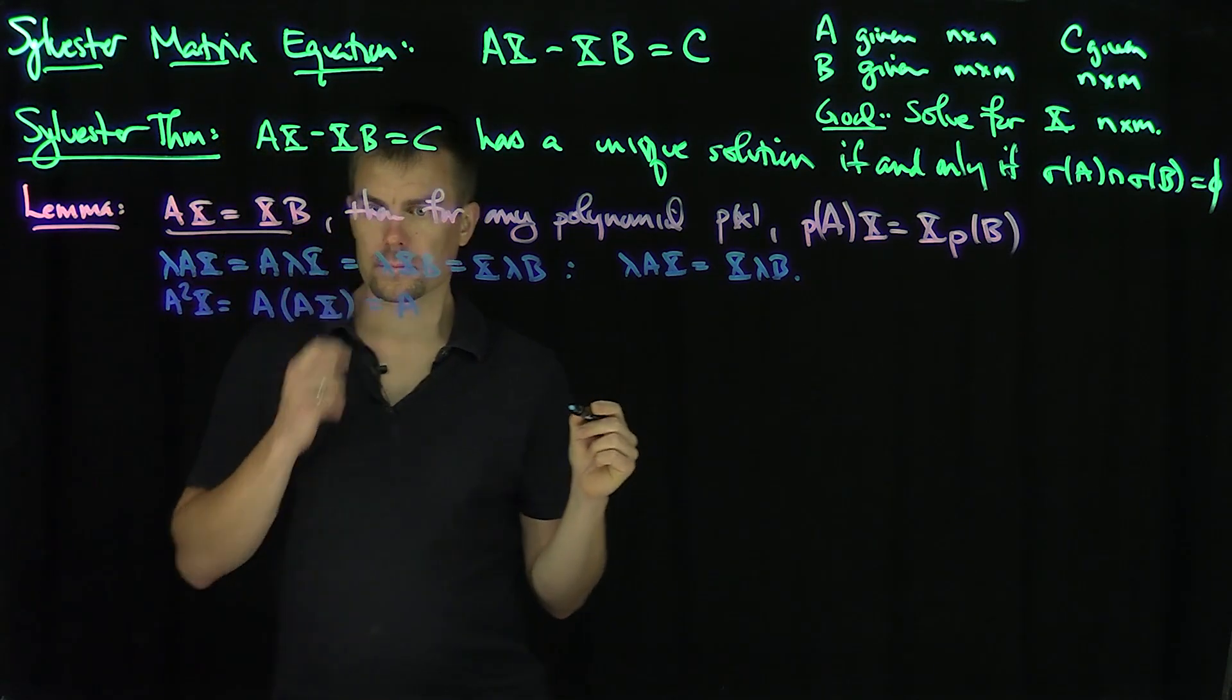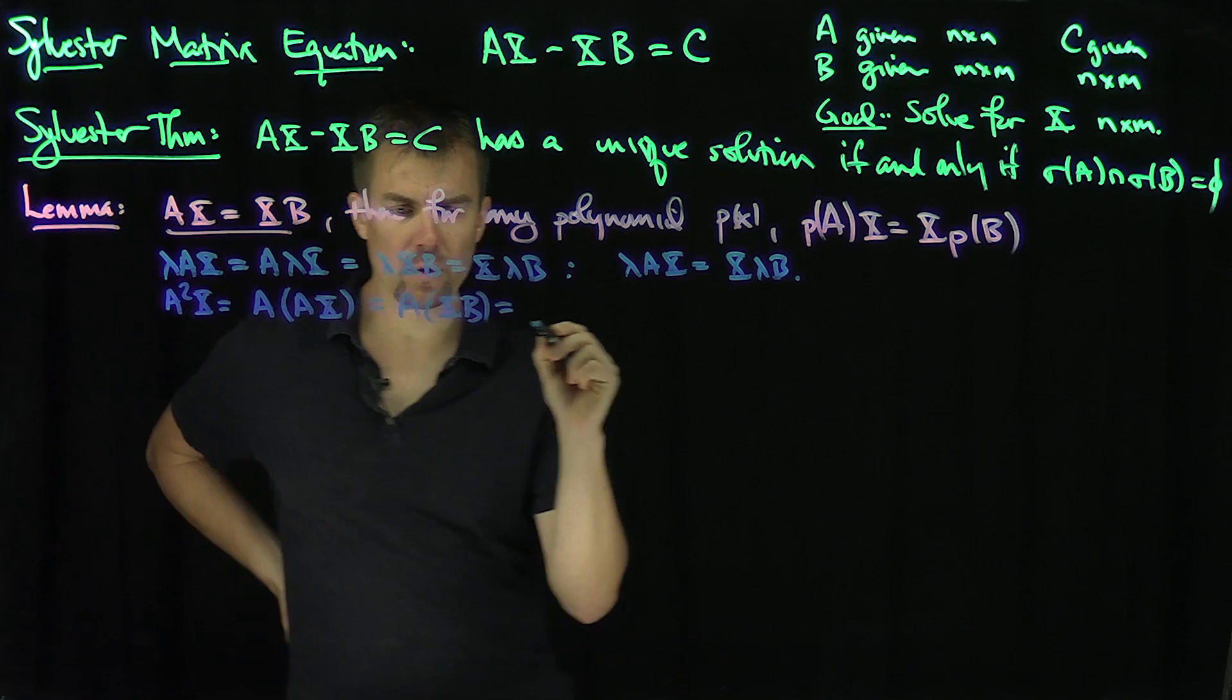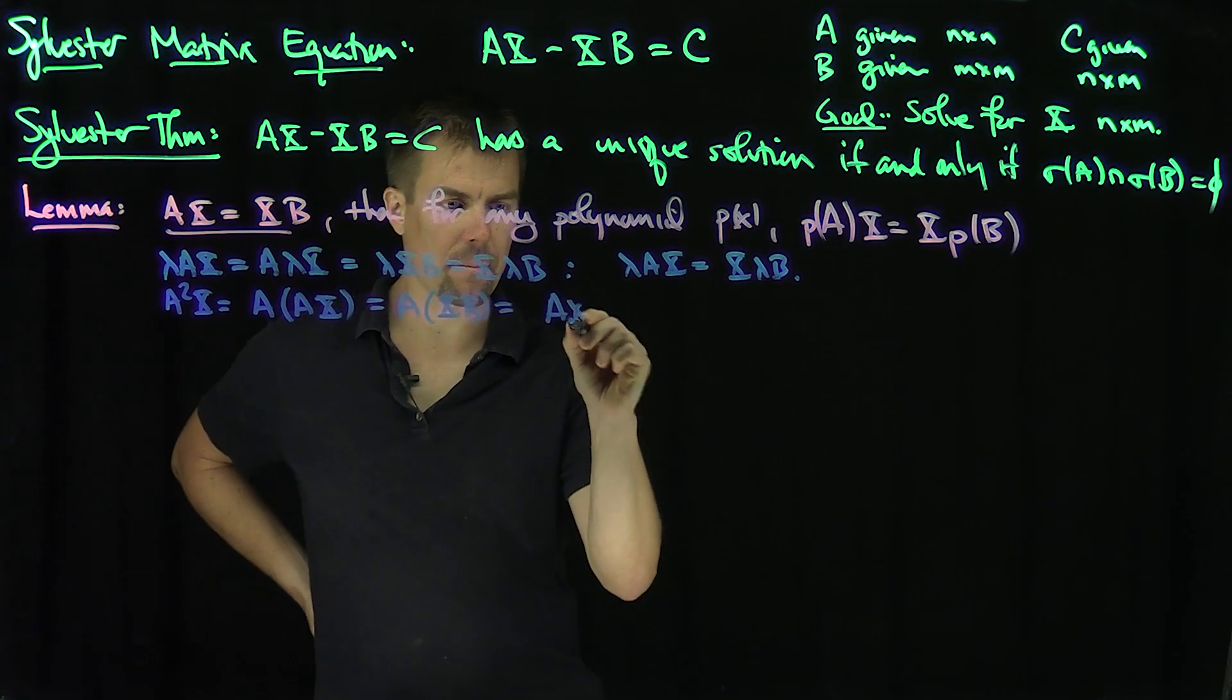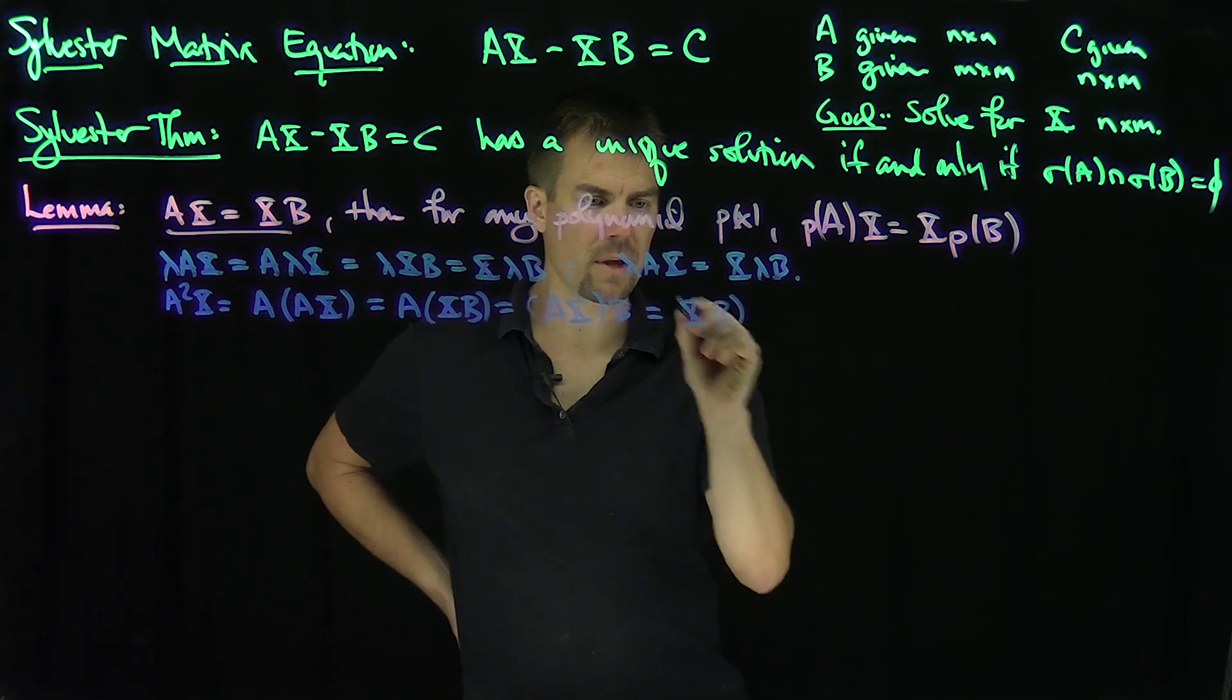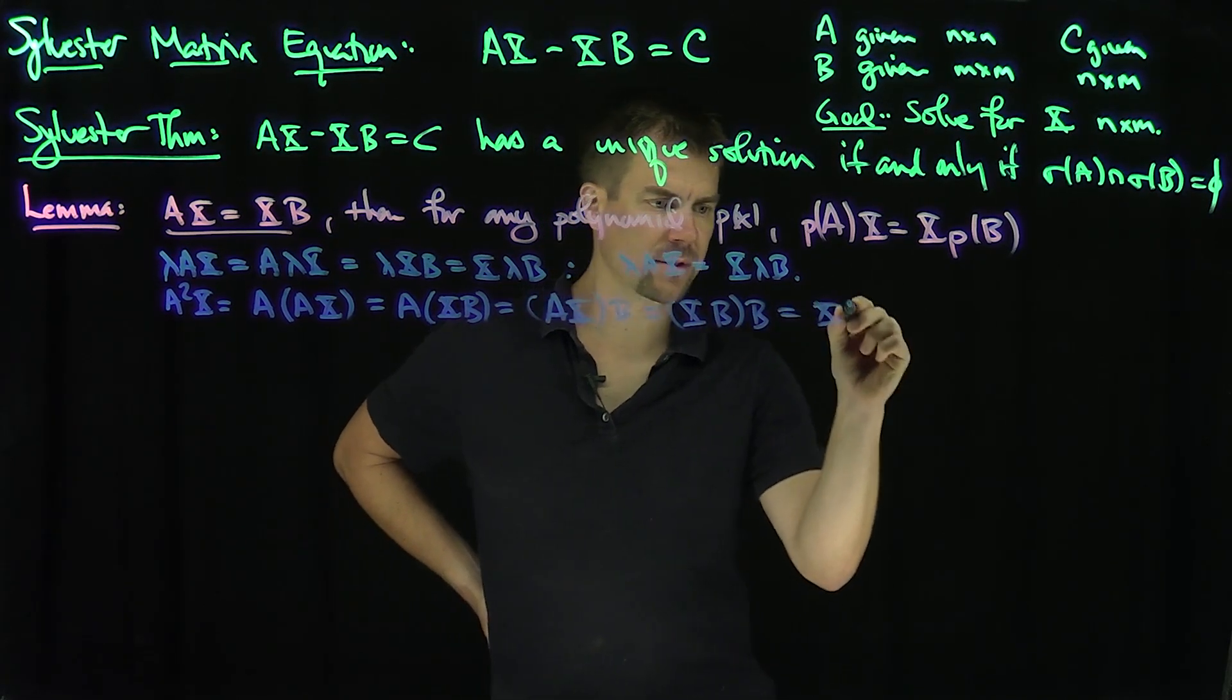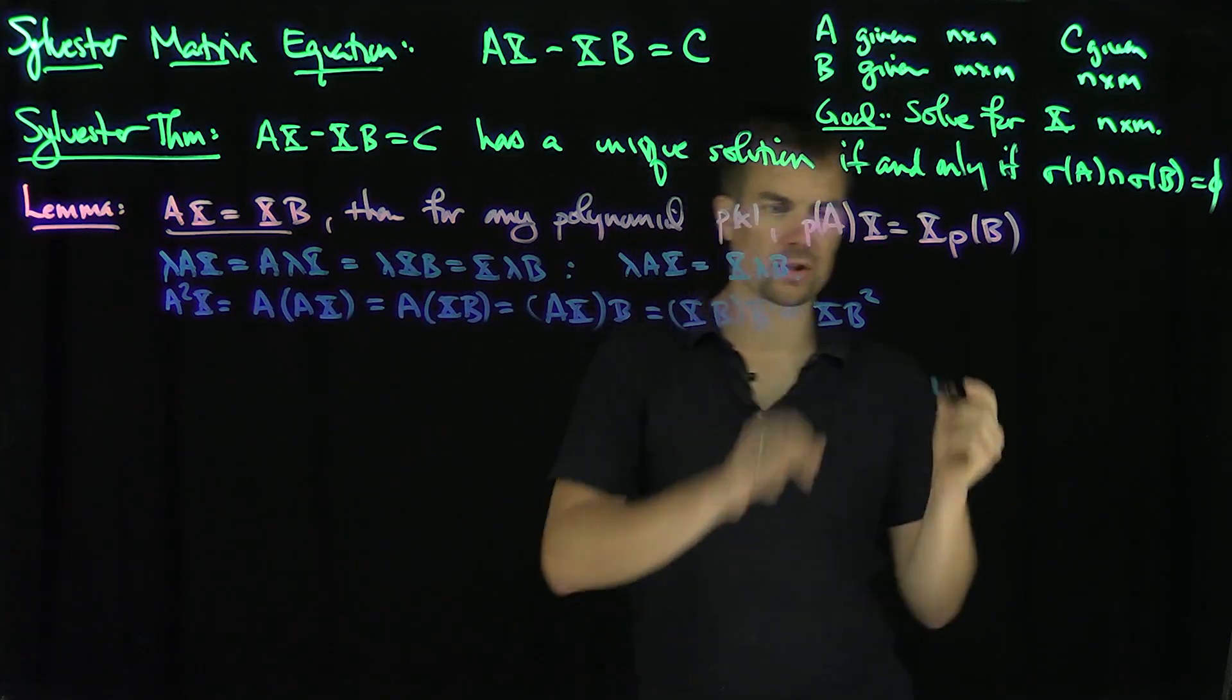That is going to be XB, which is going to be A times XB by associativity, and that's going to be XB. So XB with B, and that's XB squared. So that's true for A squared and B squared.